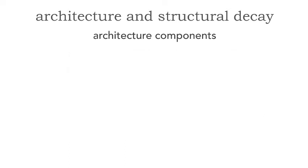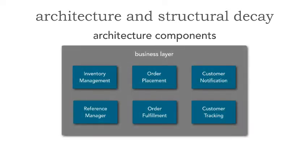Let me show you an example in terms of context of what we are really analyzing. If this is the business layer of a particular N-tiered layered architecture — or these could be services — these are components within the architecture. What I, as the architect, would define are those building blocks: inventory management, order placement, customer notification, customer tracking, order fulfillment, and a reference manager for reference data, name-value pairs, or store codes.